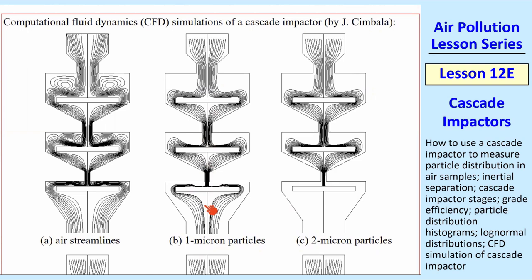Here's one micron particles. These are particle paths, whereas these are streamlines. When I studied this, I can actually see which ones hit the plates and which ones kept going through. And a few of them, one micron particles, hit this third plate. None of them hit the first or second plate. Most of them just pass through.